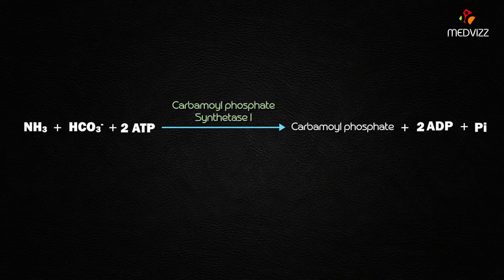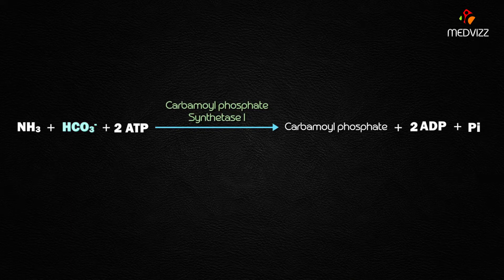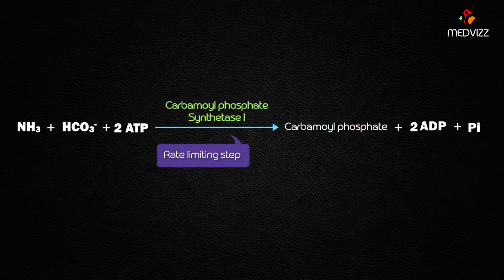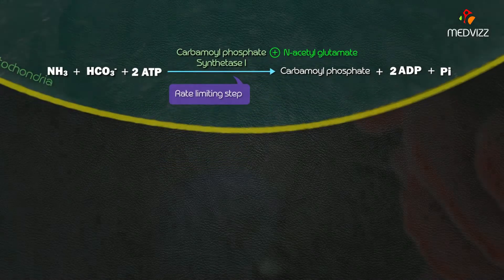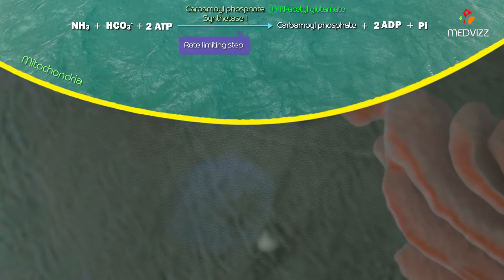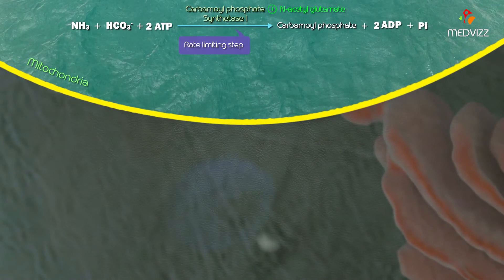The first step is the conversion of carbon dioxide and ammonia into carbamoyl phosphate, and it is the rate-limiting step, mediated by the enzyme carbamoyl phosphate synthetase 1. The allosteric activator is N-acetylglutamate, the step consumes two molecules of ATP, it takes place in the mitochondria, and the ammonia in this reaction provides the first amine group in the urea.